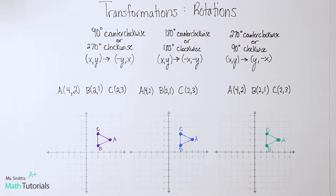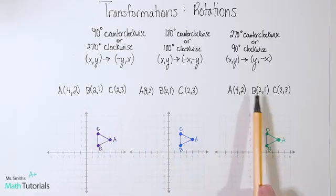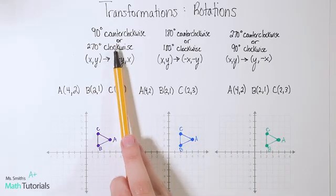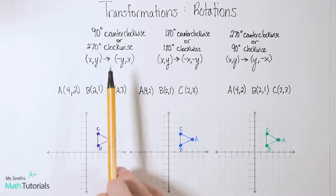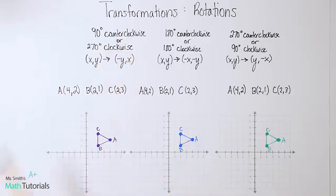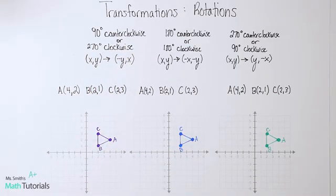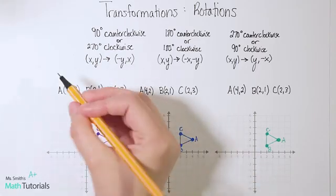These rules make a little more sense once you actually start seeing them. We're going to use the same triangle three times and apply each of these types of transformations to see how they look and how they work. The first one we're going to do is 90 degrees counterclockwise, or 270 degrees clockwise — same thing. We'll follow this rule.